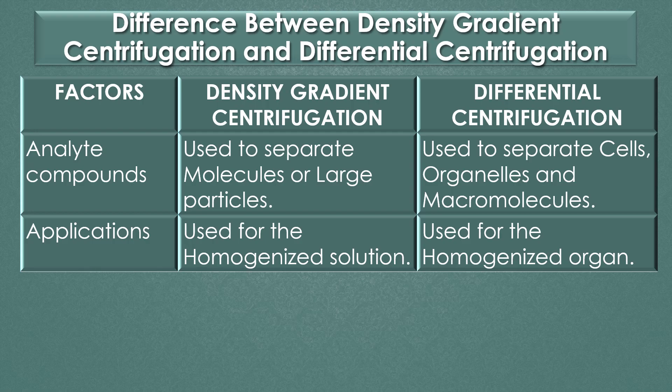Applications: Density gradient centrifugation is used for homogeneous solutions, but differential centrifugation is used for homogeneous organs. Dear viewers, that's all about the difference between density gradient centrifugation and differential centrifugation. Thank you for the support.